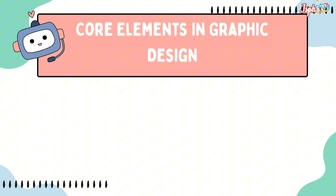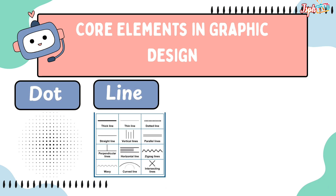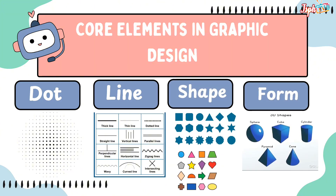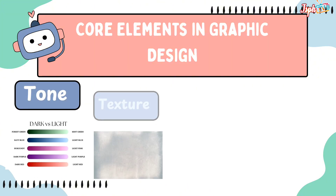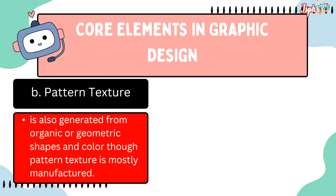We have core elements in Graphic Design. First, the dots, line, shapes, form, tone, and texture — including environmental texture, biological or man-made texture. Pattern texture is also generated from organic or geometric shapes and color, though pattern texture is mainly manufactured.